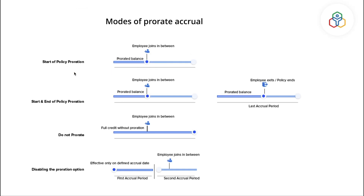Start of Policy: When this option is enabled, the entitled leave will be prorated for an employee who joins after the accrual date. As per our setting, if the employee joins in July, then this leave will be prorated for the current year. From the following years, the leave will be credited fully on the set date of accrual.